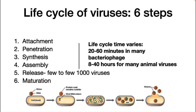Even though viruses vary considerably, their overall replication patterns are the same. The life cycle of the typical bacteriophage is 20 to 60 minutes. For animal viruses, it takes longer — 8 to 40 hours. There are six steps to viral replication: attachment, penetration, synthesis, assembly, release, and maturation. Each replication cycle can produce a few to a few thousand virions.